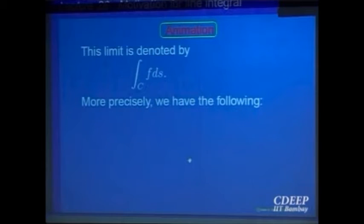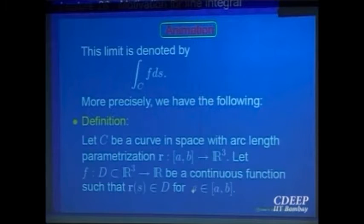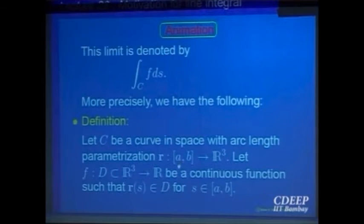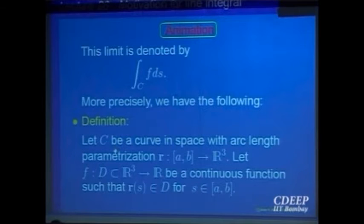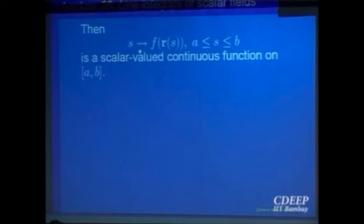Let us make this more precise mathematically. C is a smooth regular curve with arc length parameterization R: [a, b] → ℝ³, and f is a function defined on a domain D which includes the image of the curve. We combine these: s ↦ R(s) gives a point in D, and f evaluated there gives a real number. So we get a composite function s ↦ f(R(s)), which is a function defined on the interval [a, b].